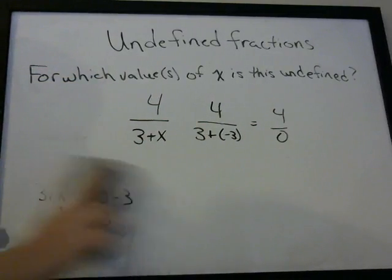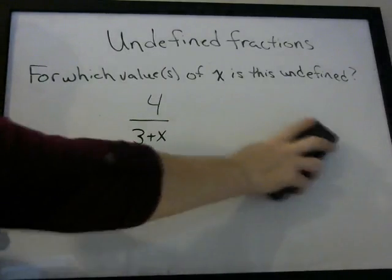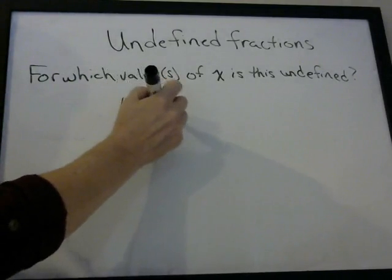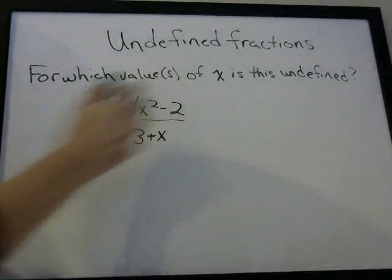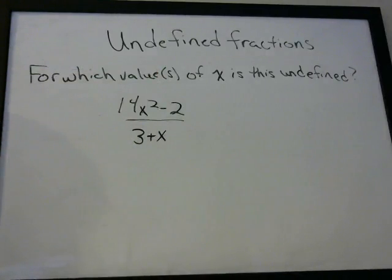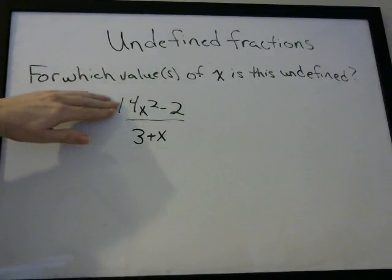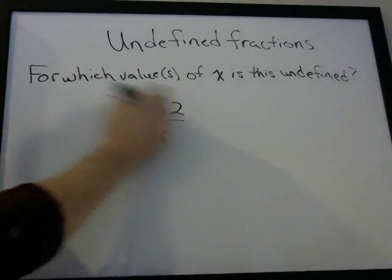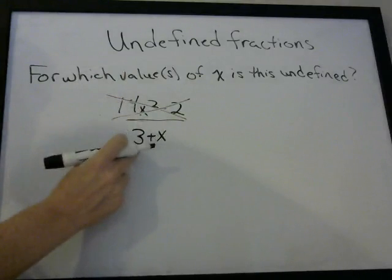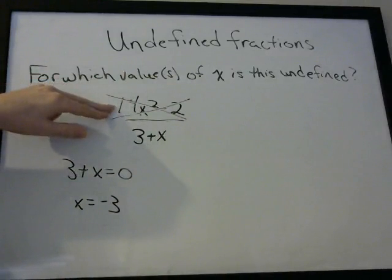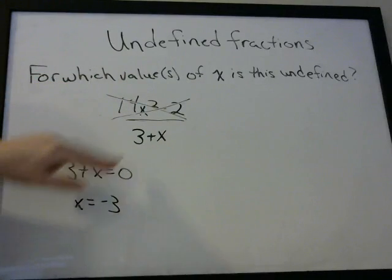They may try to distract you by putting something more complex in the numerator — for example, 14x squared minus two. Again, for the purposes of the GED test, ignore that. Only look at the denominator. In algebra, sometimes you have to factor out the numerator, but on the GED test the likelihood of having to do that is pretty low. So don't look at the numerator. Look at the denominator — when does that equal zero? The answer is the same: x equals negative three. It doesn't matter what's in the numerator.